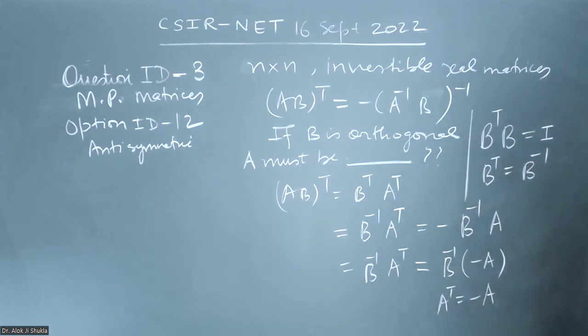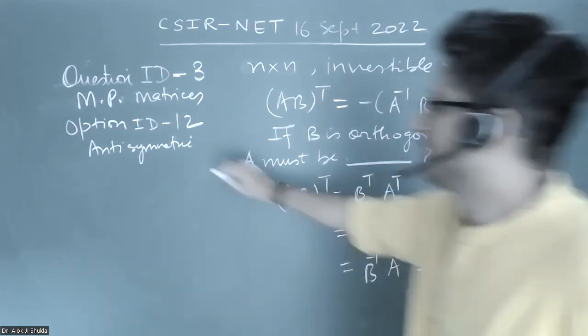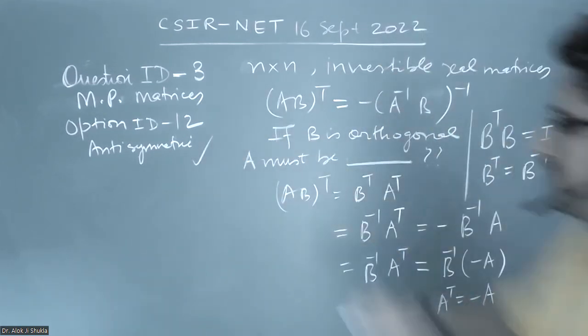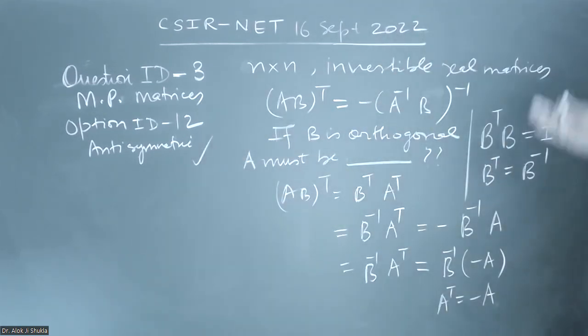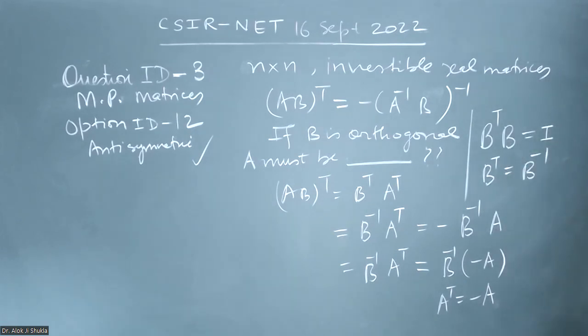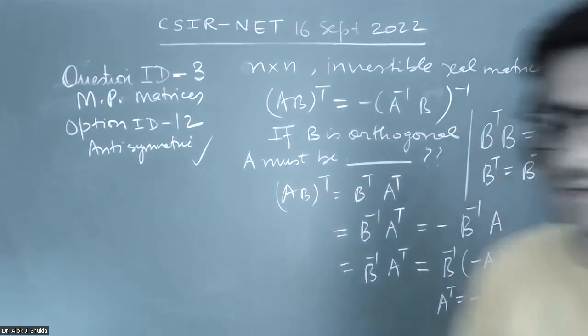So A^T equals minus A, which means A is an anti-symmetric matrix. Just straightforwardly using the definition, I have solved this question. Thank you.